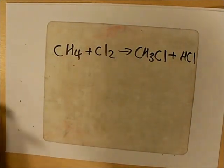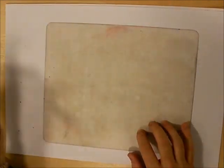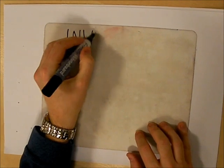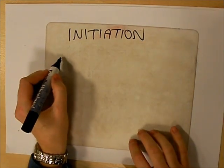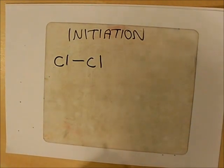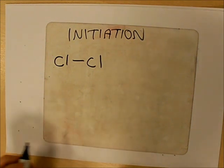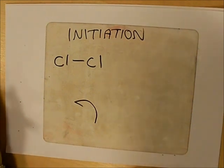The first step is what we call an initiation reaction. This is the step that kick starts the whole reaction. How you do the mechanism is you show the chlorine separated like so, and because it's homolytic fission we want to use single headed arrows like that.